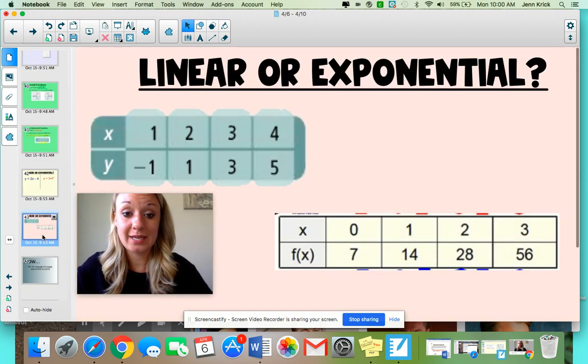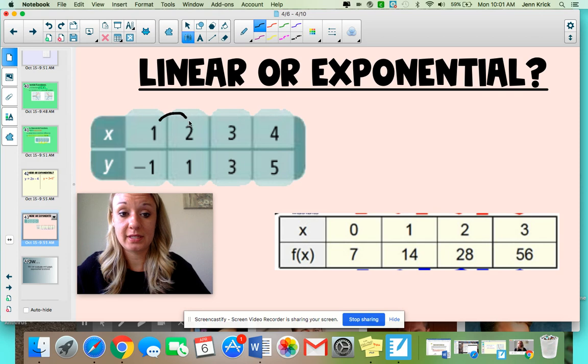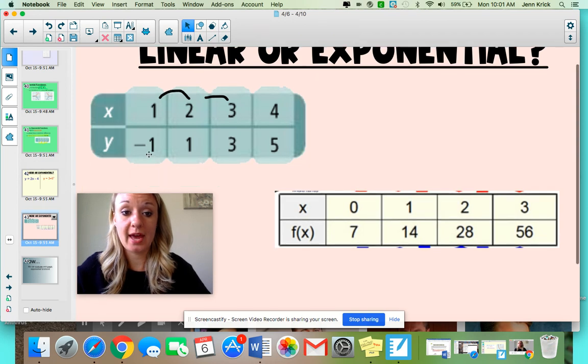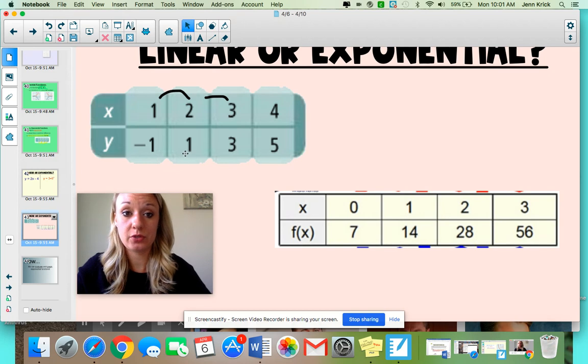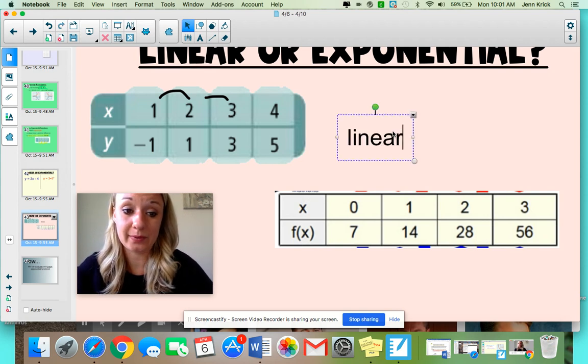When we're looking at data tables, let me grab my pen really quick. If you're looking, I see that these are all being added by one. And down here, I know that these are all adding two. So I add two, add two, add two. Because they both have a common difference, I know that this is going to be linear. Because we're just adding, we're not multiplying.